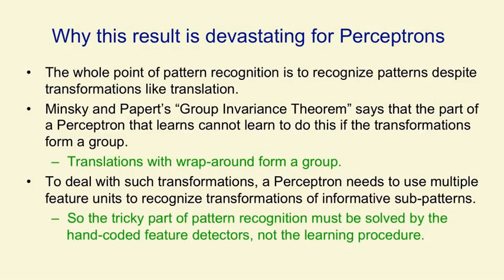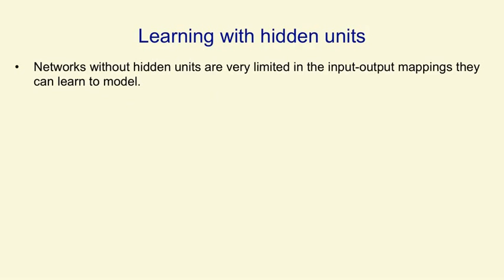The temporary conclusion from this is that perceptrons are no good, and therefore neural networks are no good. The longer-term conclusion is that neural networks are only going to be really powerful if we can learn the feature detectors. It's not enough just to learn weights on feature detectors — we have to learn the feature detectors themselves. The second generation of neural networks, which we'll come to in the next lecture, was all about how you learn the feature detectors. But it took 20 years before people figured out how to do that.